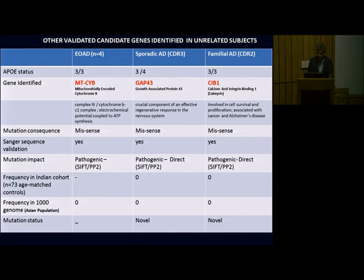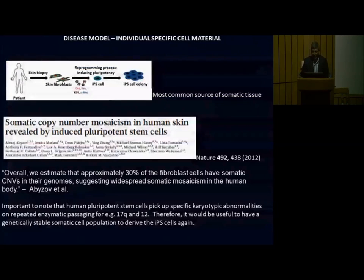For the other two, which have also been implicated, the GAP43 gene, which is a crucial component of an effective regenerative response of the nervous system. This is a novel mutation not being detected in 73 controls or in the thousand genome project. So this is a novel mutation which has not hitherto been reported. Same thing goes for the CIB1, ganshwin integrin binding calmyrin gene, which is involved in cell survival and proliferation. It has already been associated with cancer and Alzheimer's disease, but it's a different SNP. And this one again is novel in the sense that it's absent in these two databases.